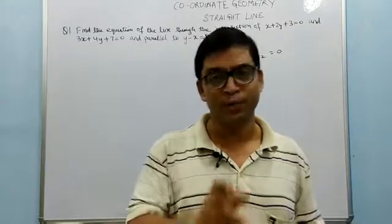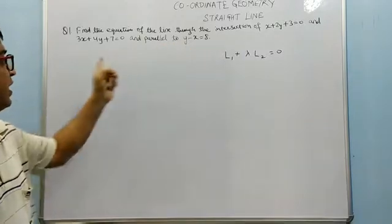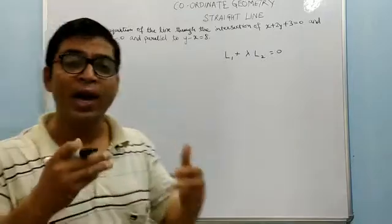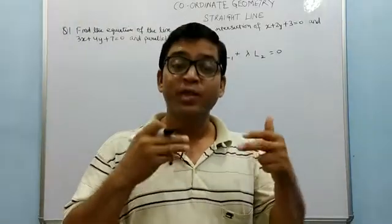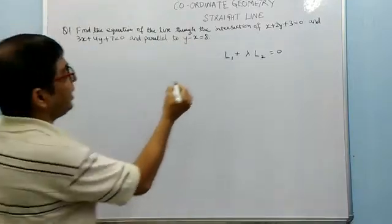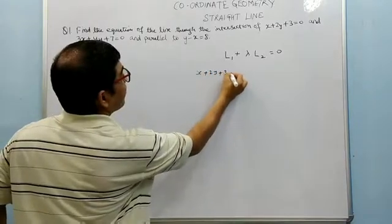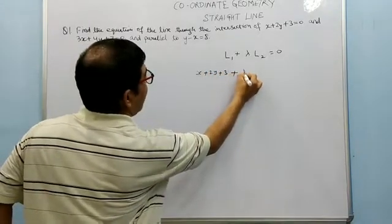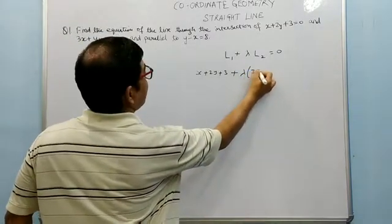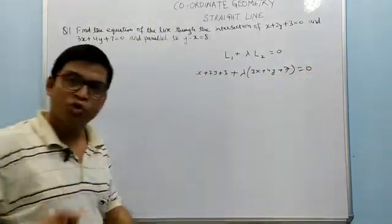See here in this question: find the equation of a line through the intersection of the first and second line, and parallel to a given line. The two lines are given and we have to find a third line passing through their intersection. So it is going to be: x plus 2y plus 3, plus lambda times the equation of the second line 3x plus 4y plus 7, equal to zero.